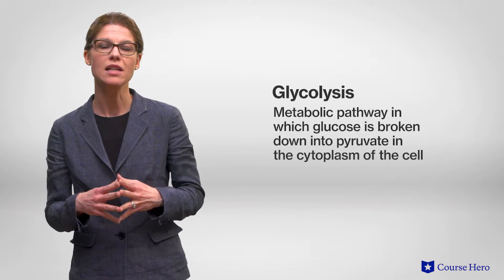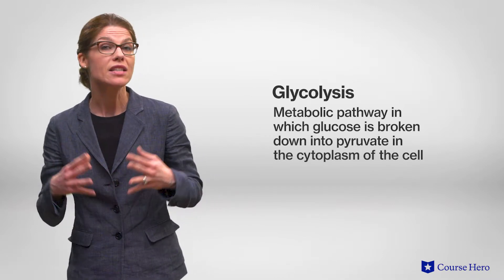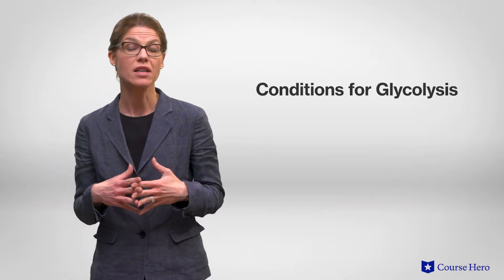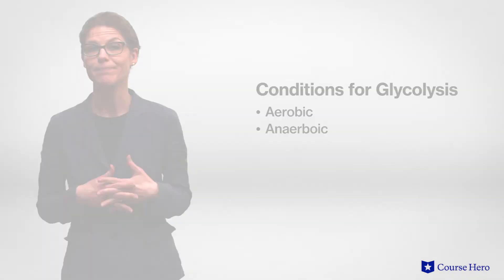Glycolysis is the first pathway used by cells to break down glucose for energy. It is a metabolic pathway in which glucose is broken down into pyruvate in the cytoplasm of the cell, and it takes place outside the mitochondria, whether oxygen is present or absent. In other words, it takes place under both aerobic and anaerobic conditions.